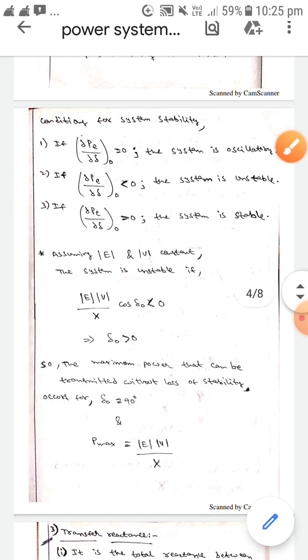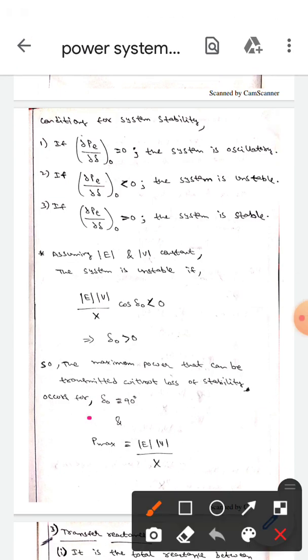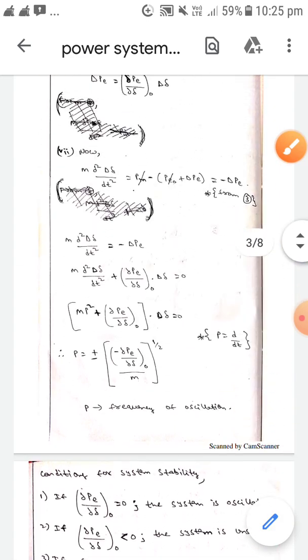So the maximum power—we know that when delta is 90 degrees, we will get P-max = |E|·|V|/X. When δ0 is 90 degrees, sin(δ0) is one, so we write P-max = |E|·|V|/X.